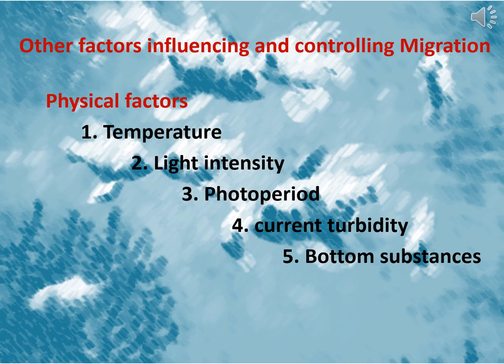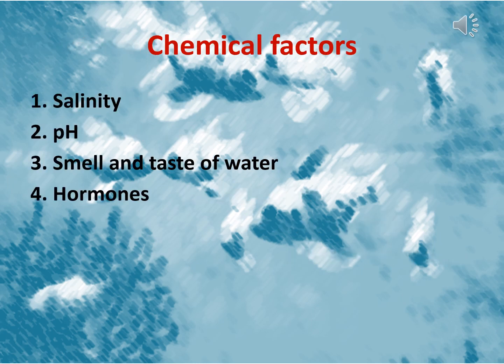Physical factors influencing migration are temperature, light intensity, photoperiod, current, turbidity, or bottom substances. Chemical factors for migration could be salinity of water, pH of water, smell and taste of water, and the hormones secreted in the body of fishes.